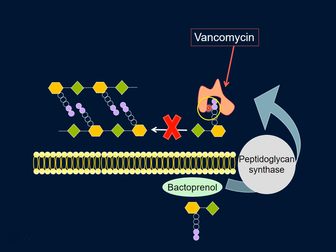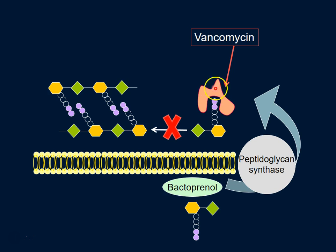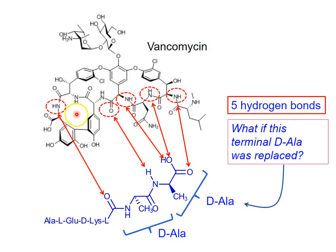The problem is that vancomycin grabs on very tightly to the last two amino acids and prevents peptidoglycan synthase from flipping the sugar unit and attaching it to the cell wall being synthesized. As a result, in the presence of vancomycin, bacteria cannot complete the cell wall, leading to a bactericidal effect. Vancomycin itself is a cyclic glycopeptide — the glyco part consists of two sugars, and the rest is the cyclic peptide.